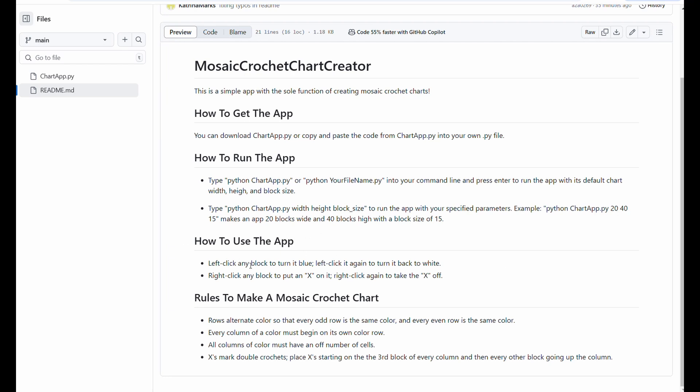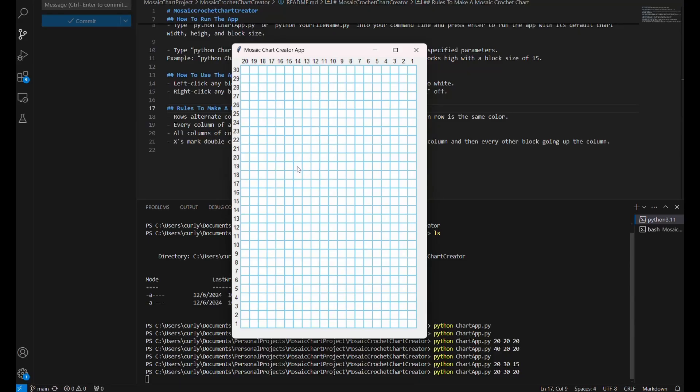So using the app is also very, very simple. All this app does is you left click and that makes the blocks blue. You can left click them again to turn them back to white. And then right clicking will put X's on any of the blocks and right clicking again will take the X's away. And that's that literally, like I said, no learning curve.